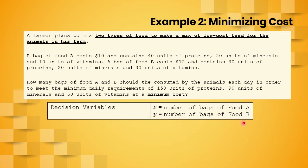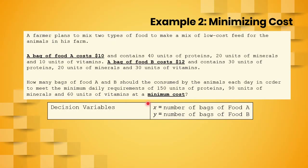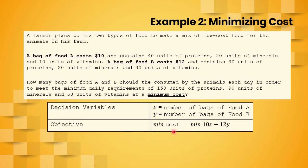Now for our objective function, we want to minimize cost. A bag of food A costs $10 and a bag of food B costs $12. So the total cost for x bags of food A and y bags of food B gives us the objective function: minimize 10x + 12y.